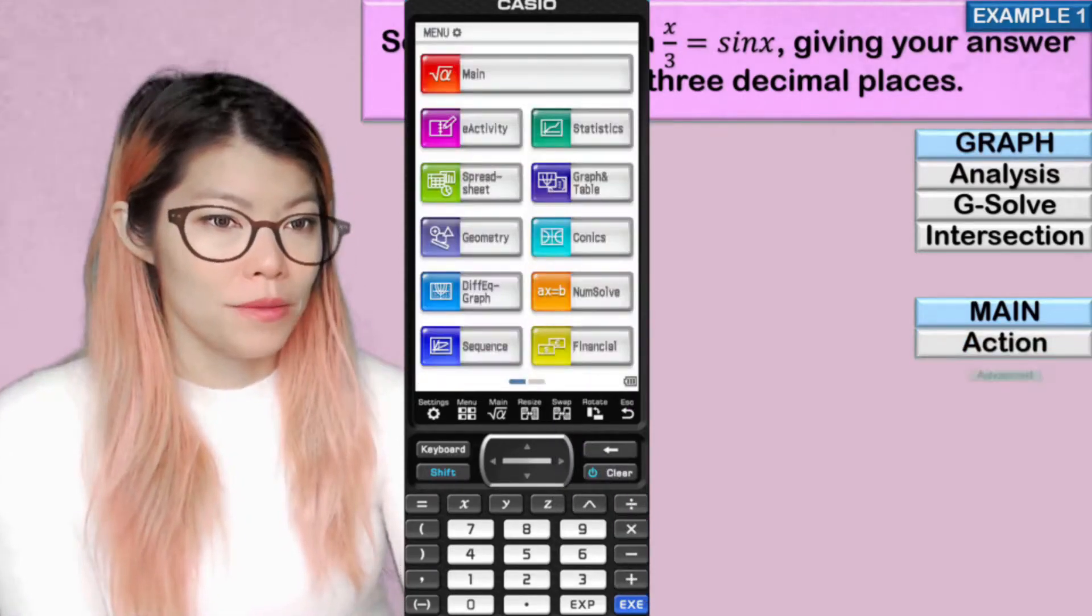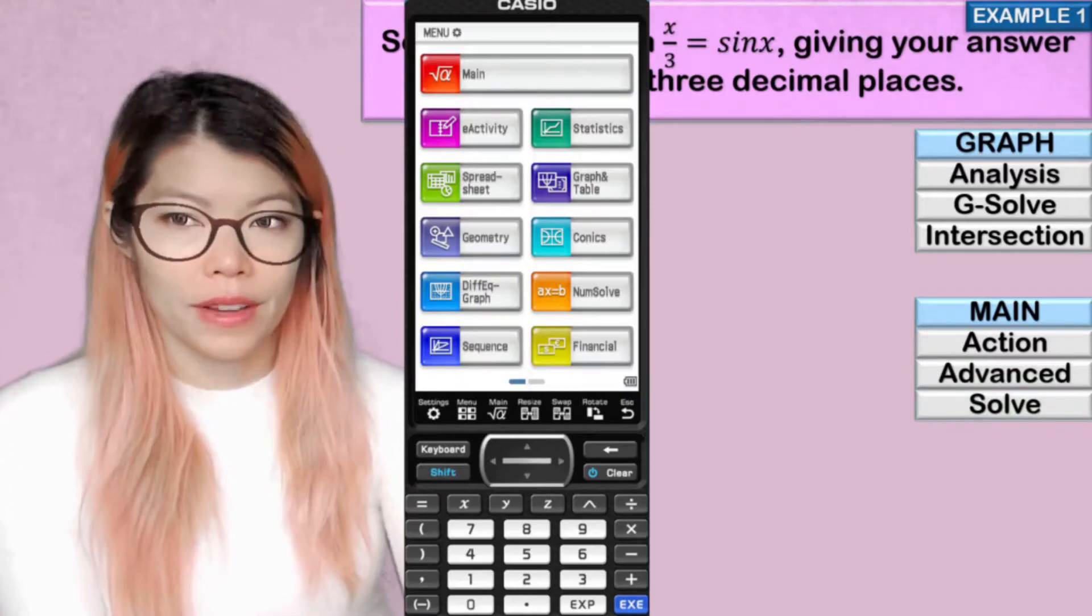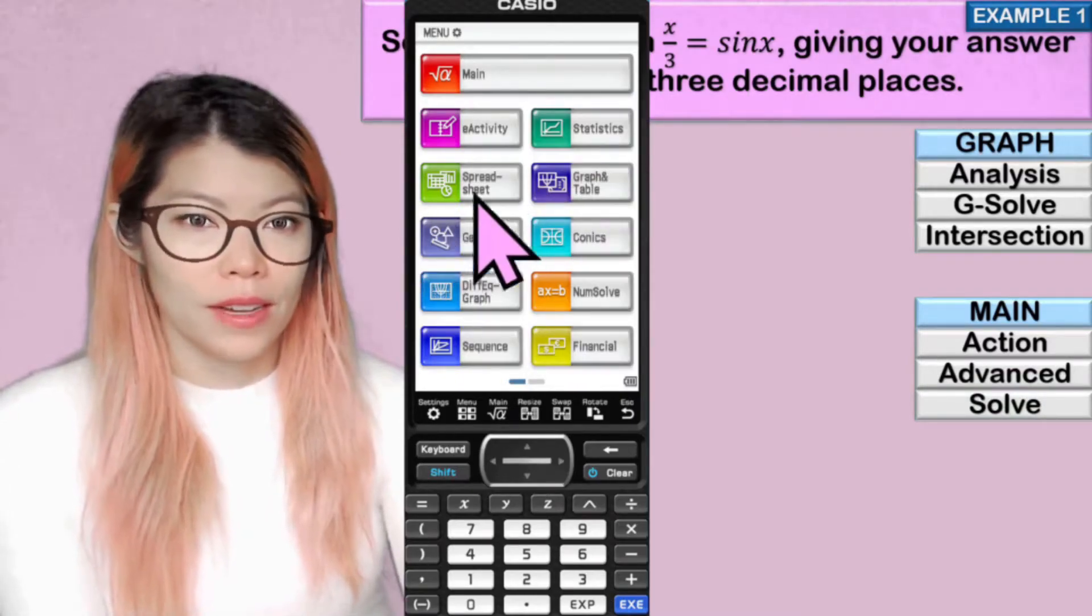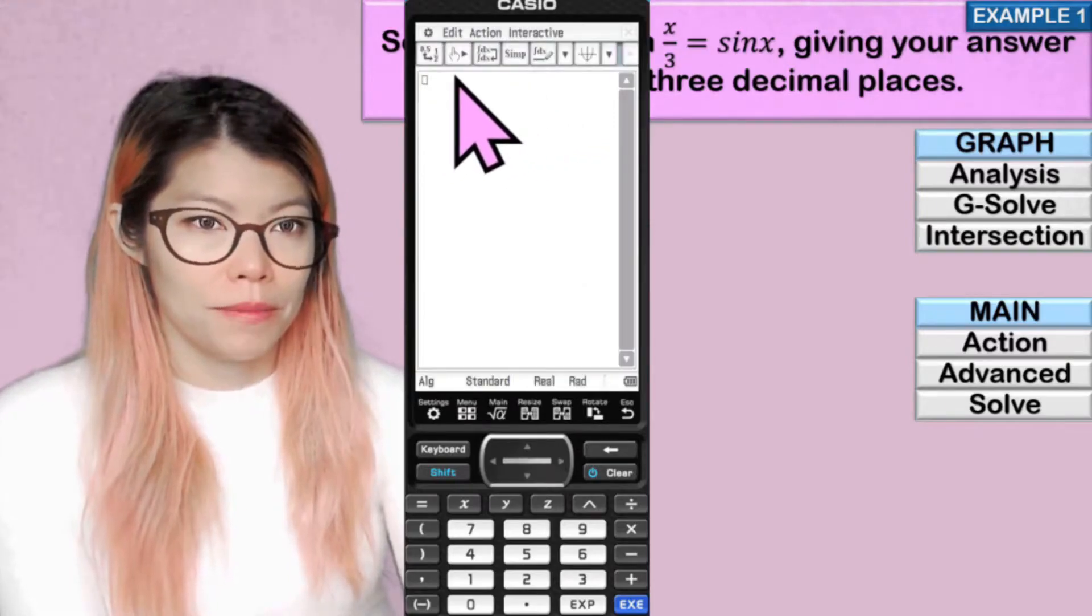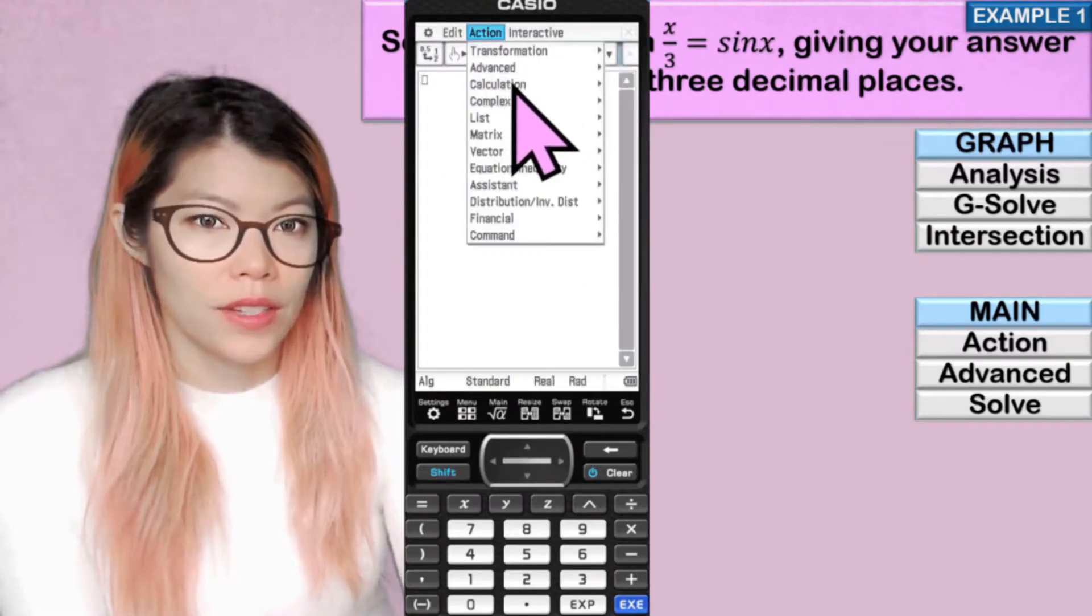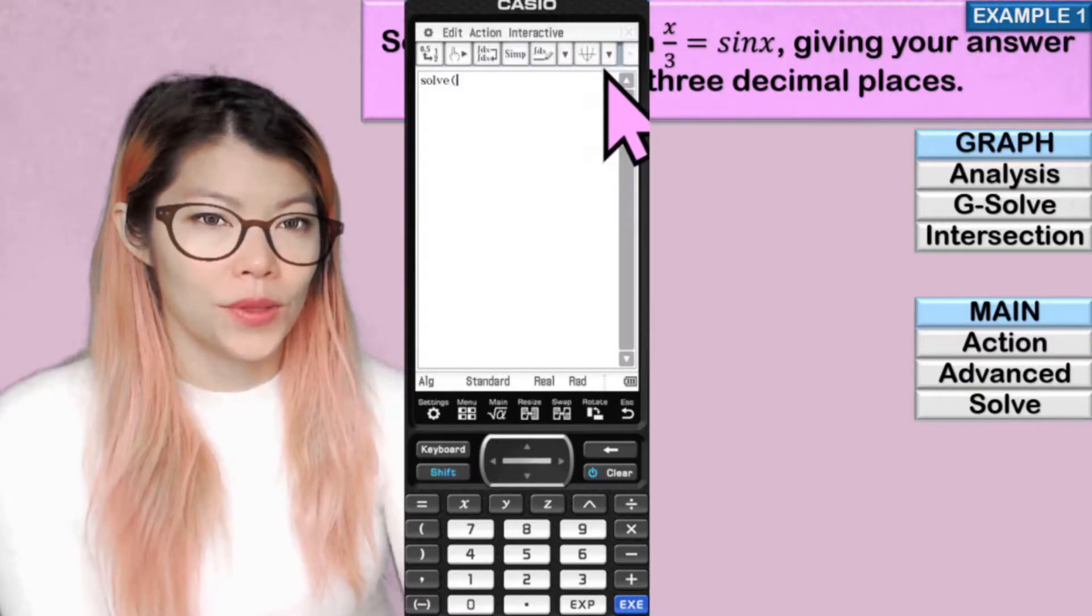Okay, let's try using main this time. And we have to use action, advance, solve. So let's go to our calculator. We can click on main. So in main, we go action, advance, and solve.